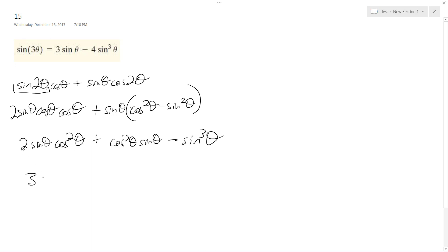So I add these two together, it becomes 3 sine theta. Actually, I can factor out a cosine, so I get cosine squared theta times 2 sine theta plus sine theta minus sine cubed theta.